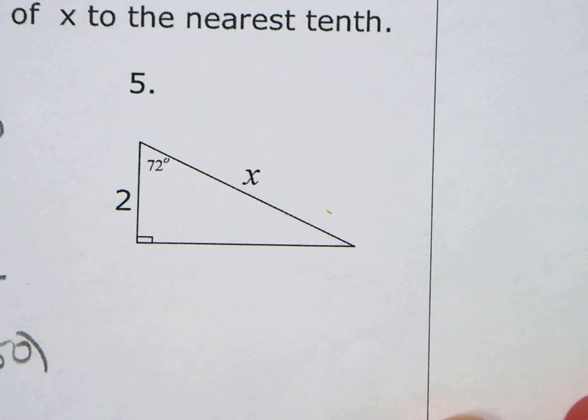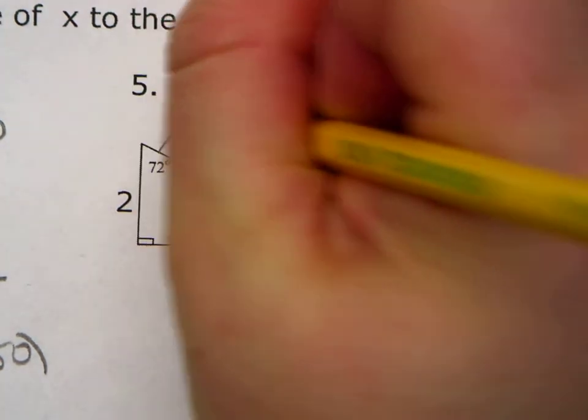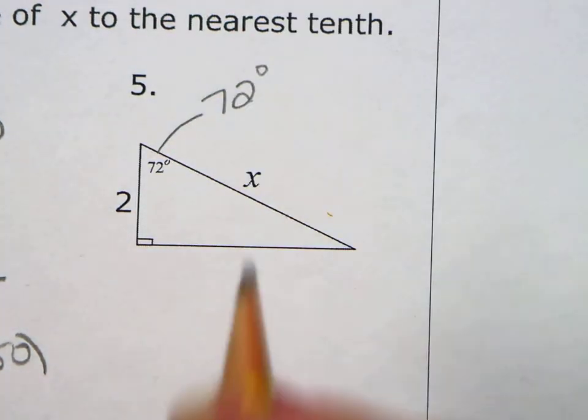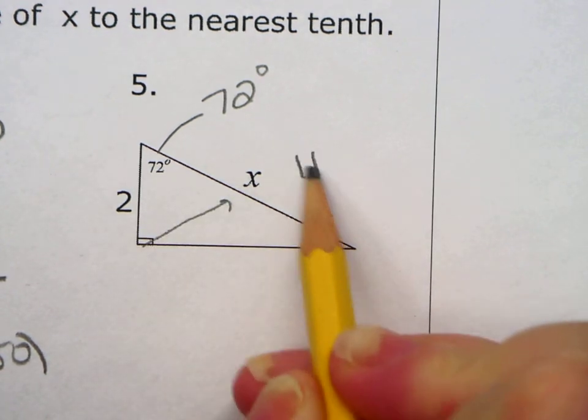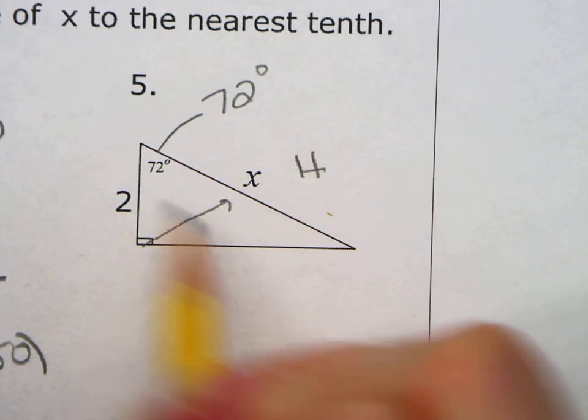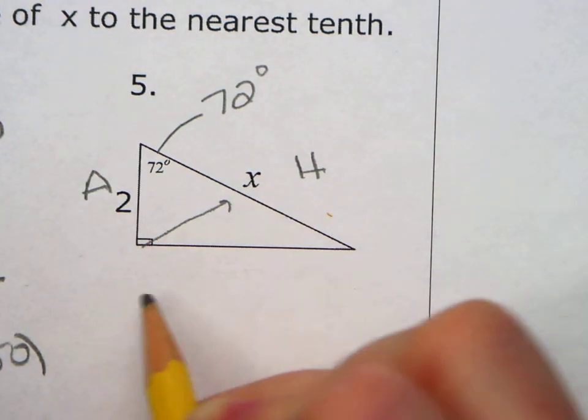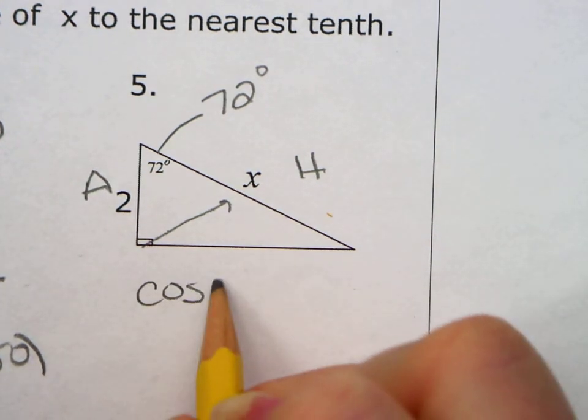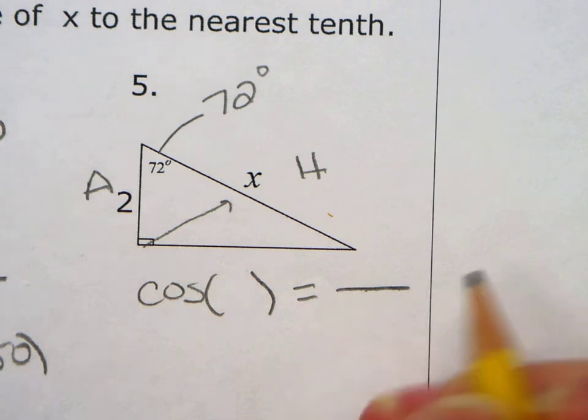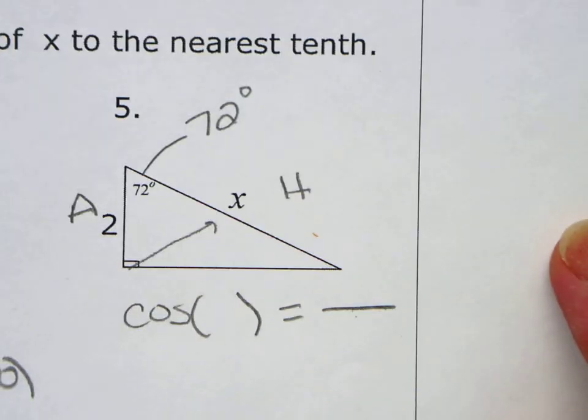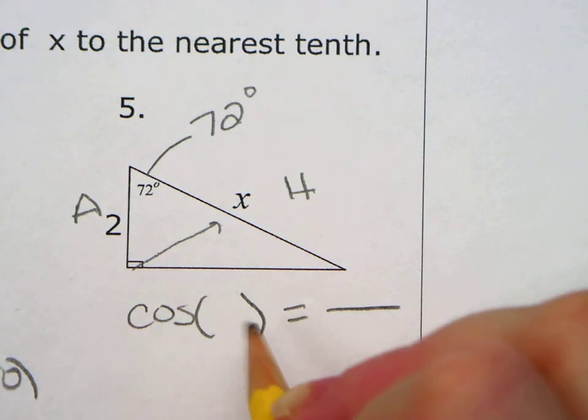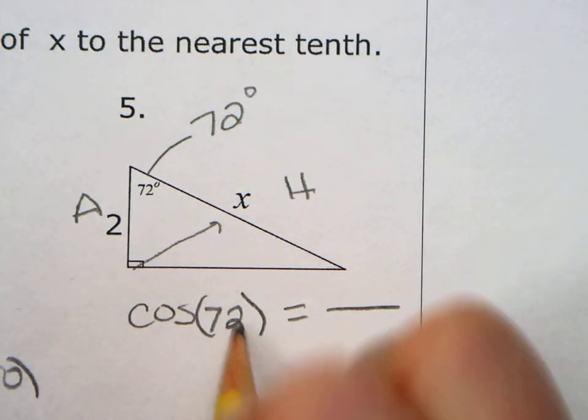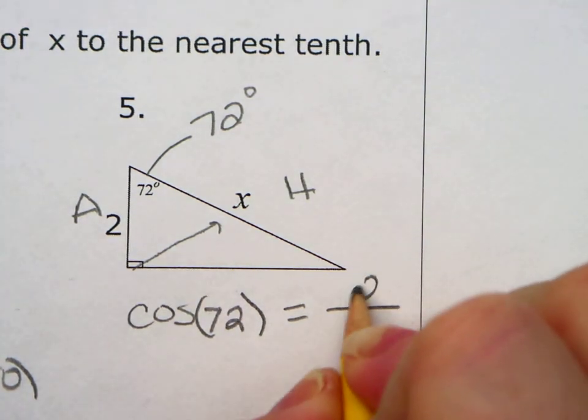Okay. That's a 72 if you can't see. That's a 72 degrees. All right. Label. So I have my hypotenuse. This is opposite. This is adjacent. So which one is that? That's your cosine. Cosine of equals. Notice I always write it the same way every time. What goes inside the parentheses? 72.